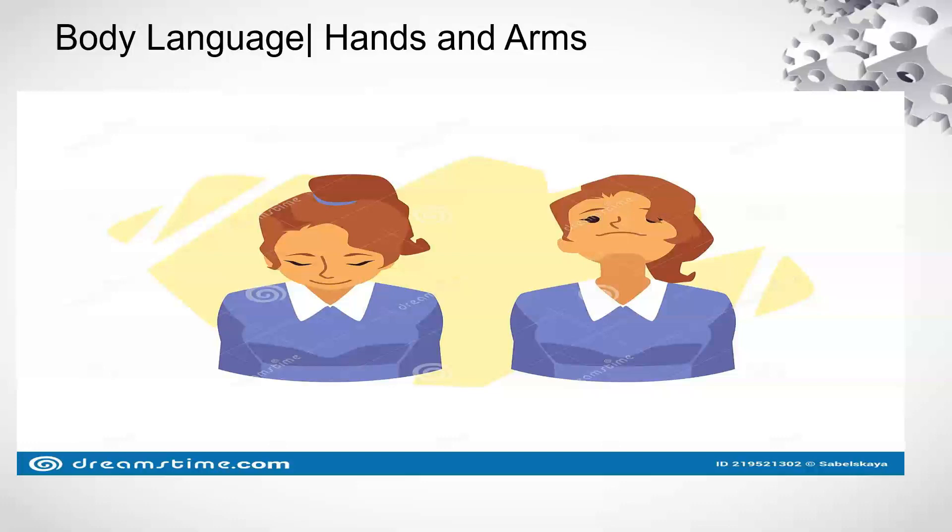Possibly even trying to exert power over a situation. Someone with their hands on their hips might also be trying to assert their power. Signals. Everyone has different body language clues that they use as signals.